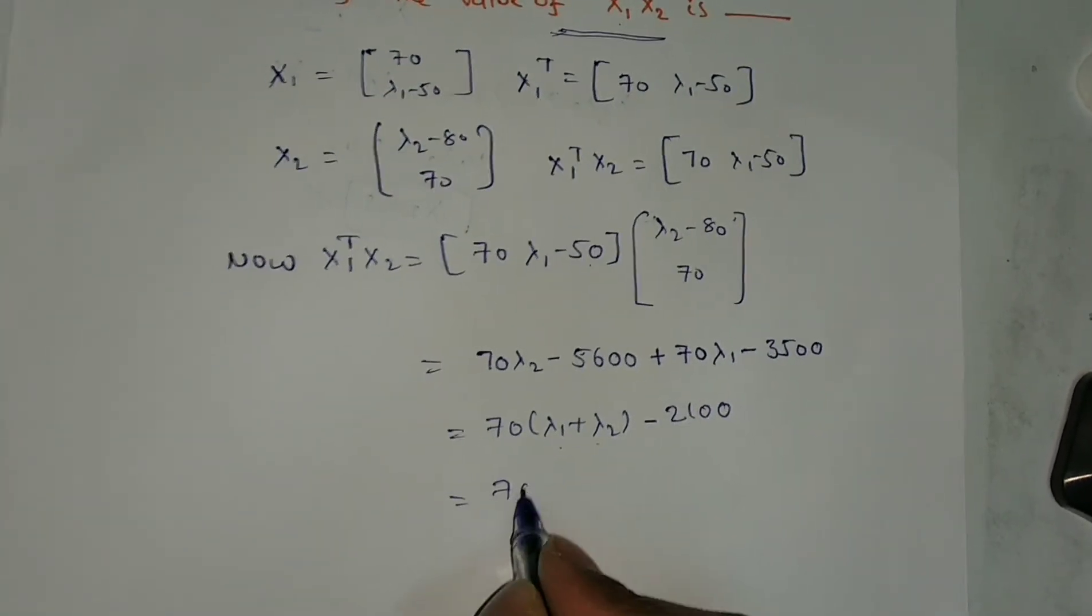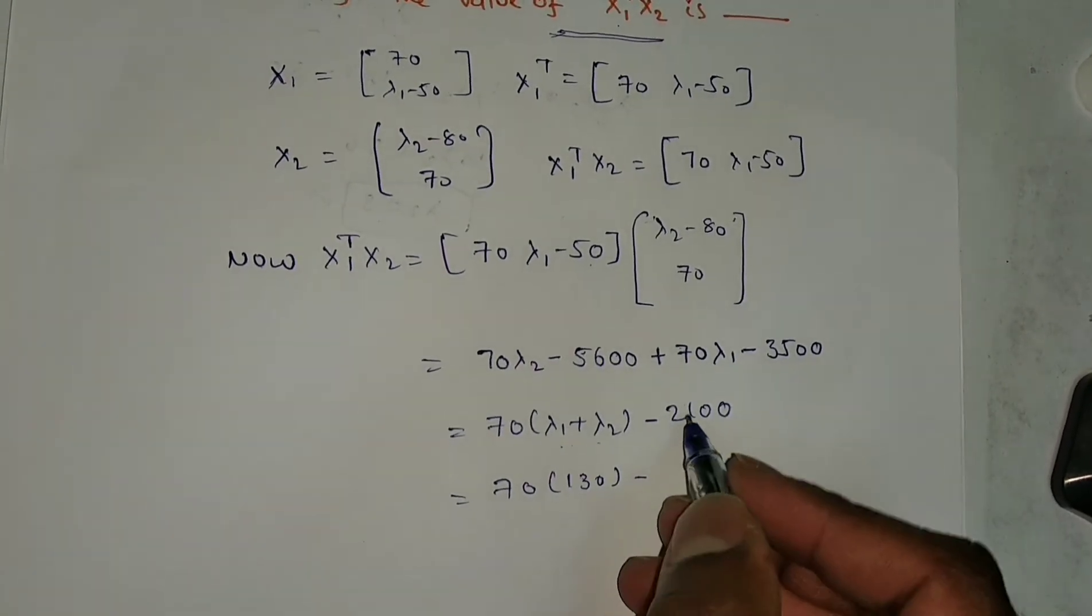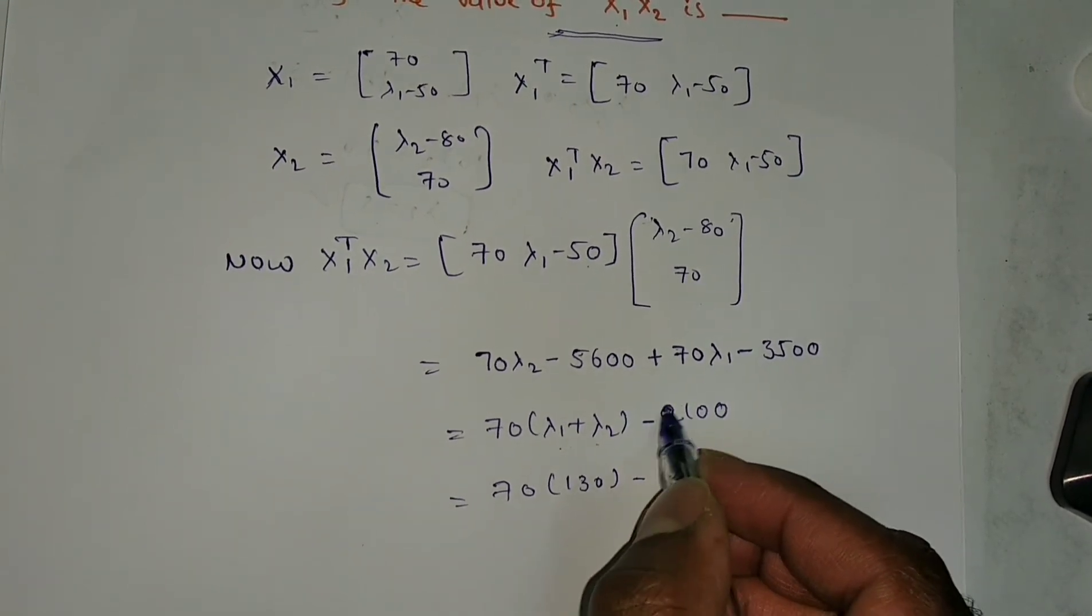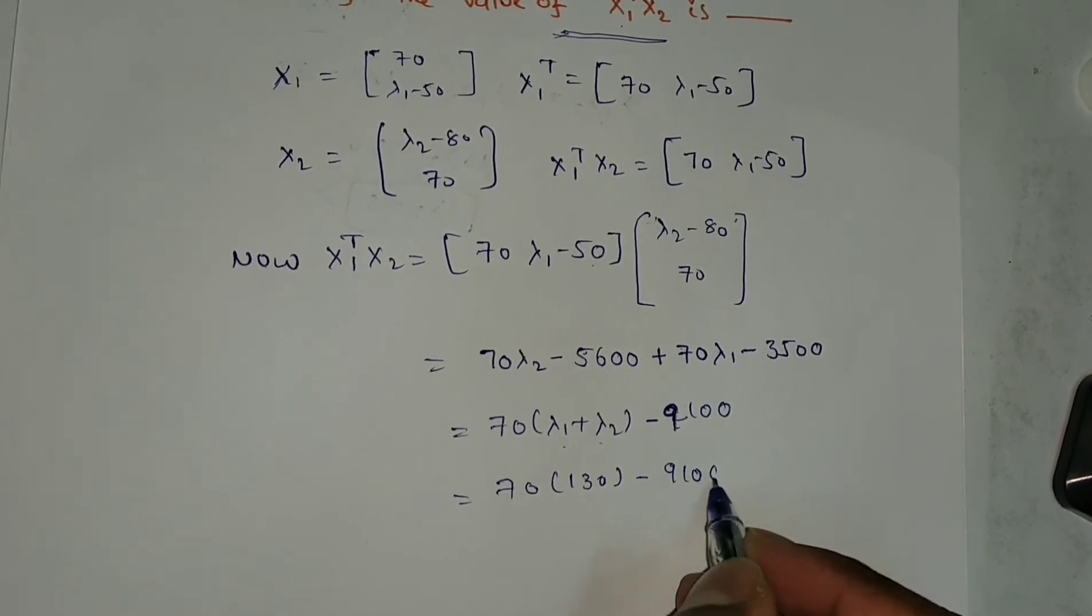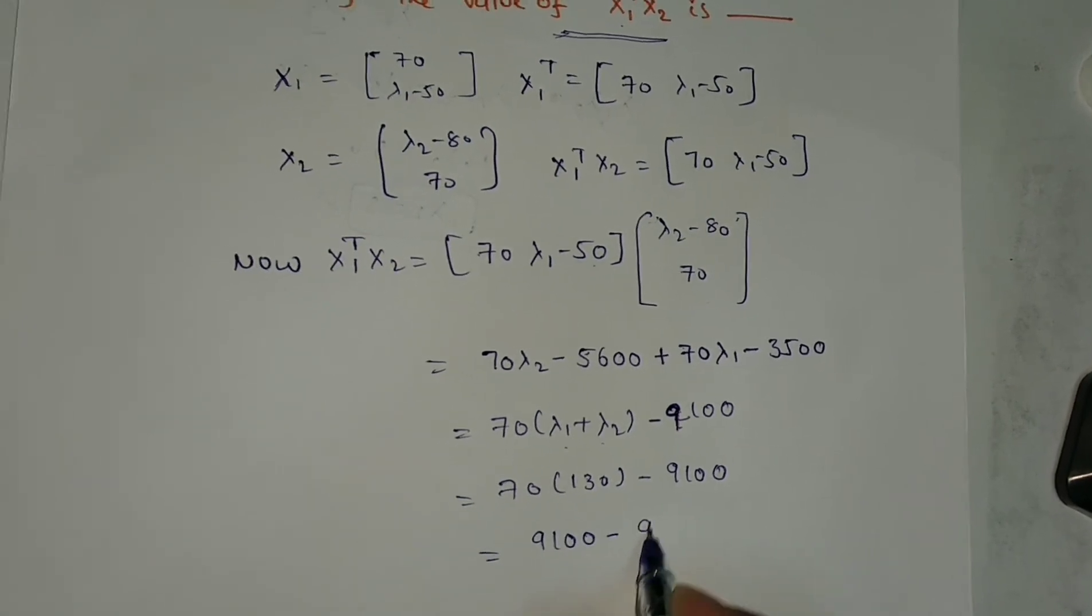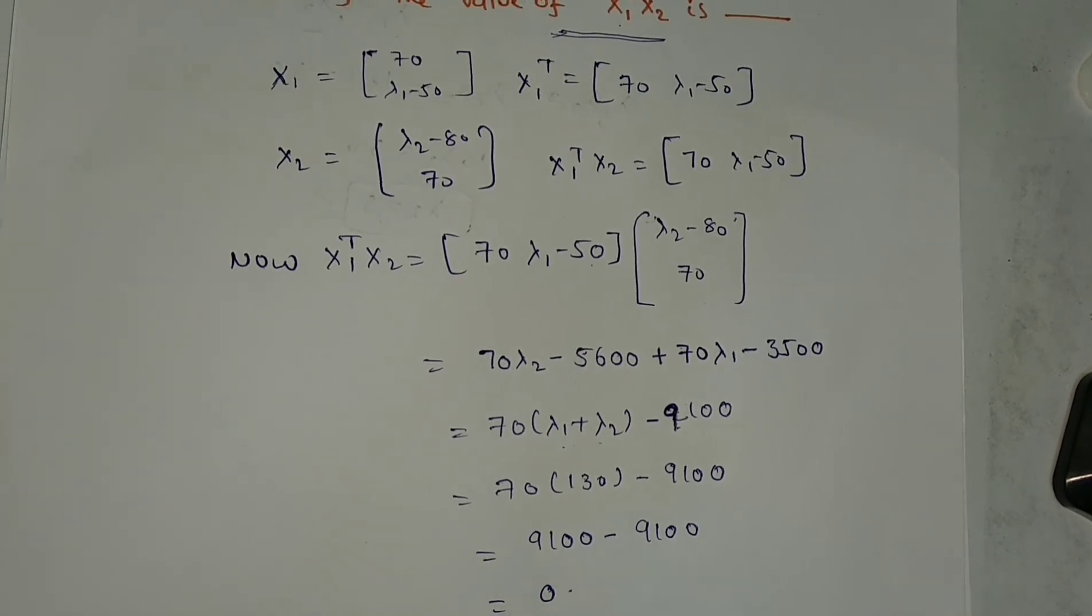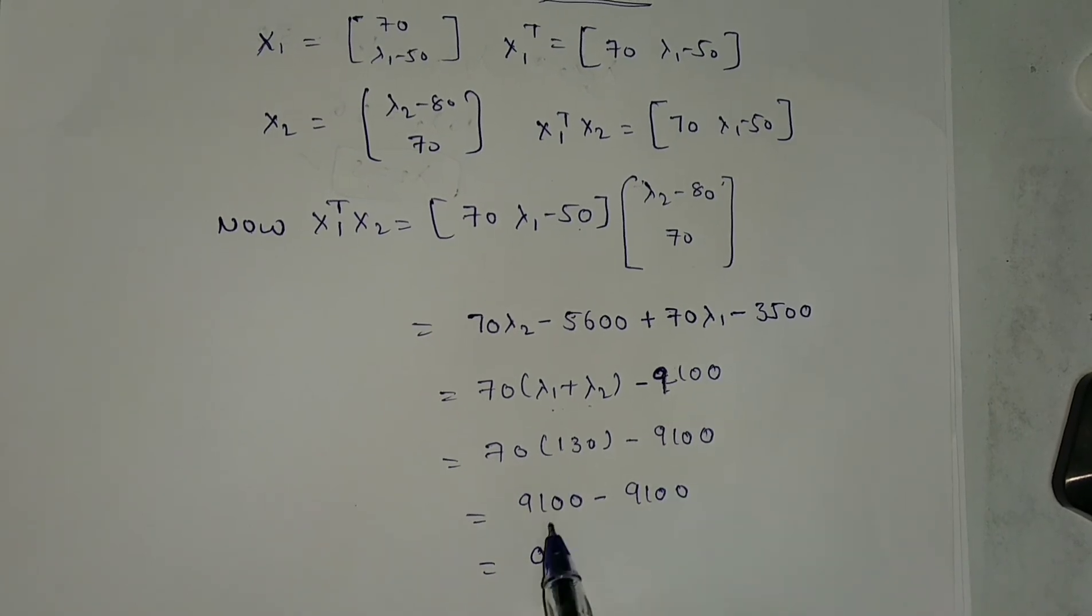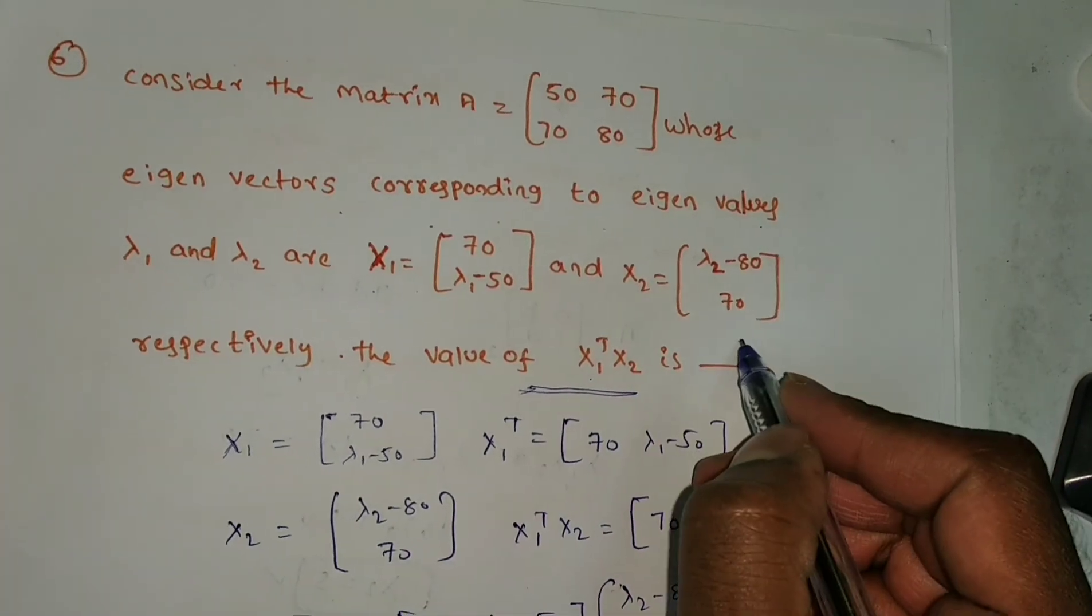Sorry, this is not plus, so it will become 9100. 9100 minus 9100 becomes 0. Therefore, x₁ transpose into x₂ equals 0. So here you need to write 0.